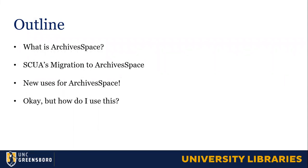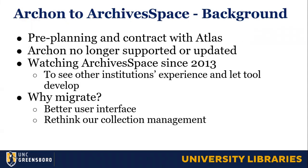ArchivesSpace is our information management system that holds our finding aids, our accession records — pretty much all of the data that we collect and create connected to and describing our collections. It's a really great system. It's sort of a union of all the other archival management systems that came before it — Archon and Archivist Toolkit in particular. It supports all pretty much all of the functions throughout a collection's lifecycle: from ingest, when we would create an accession record, all the way to the creation of the finding aid, which would describe the collection and connect to bibliographic terms, subject terms, and agent records that would make the collection more discoverable to the end user.